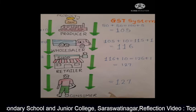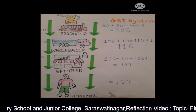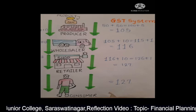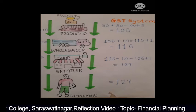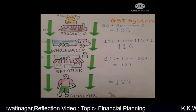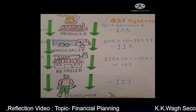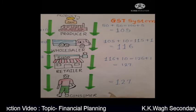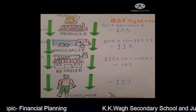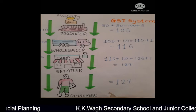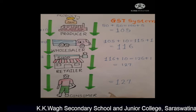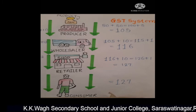Then, the wholesaler will sell the product at the rate of 116. The retailer will also add 1% of tax and will sell the product at the rate of 127 rupees to the consumer. And the consumer will get the product at 127 rupees.